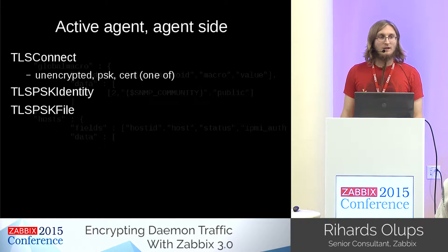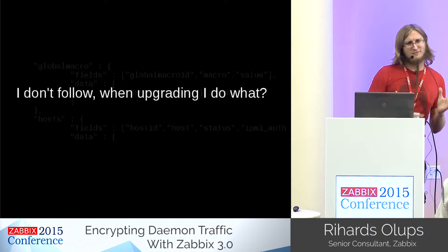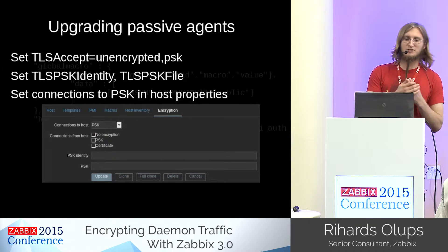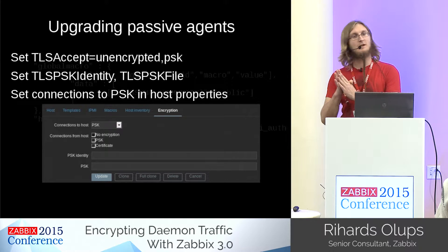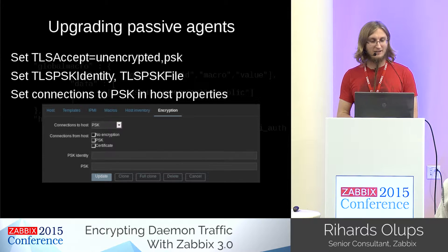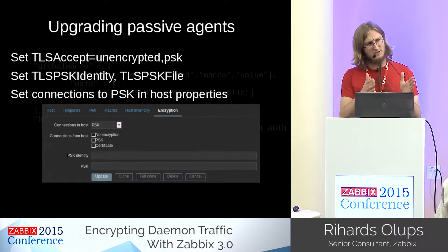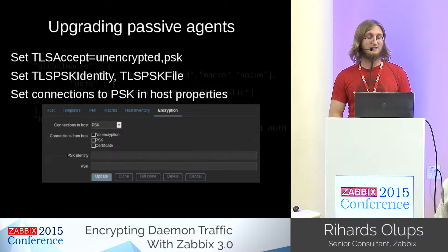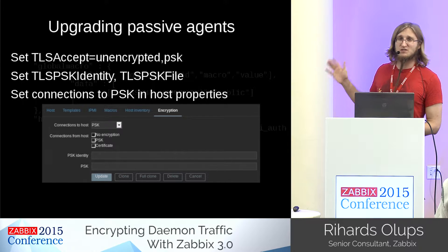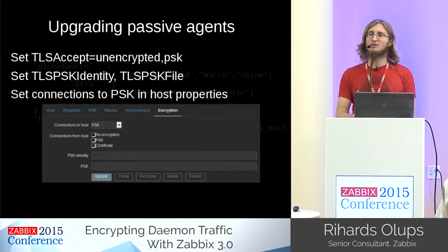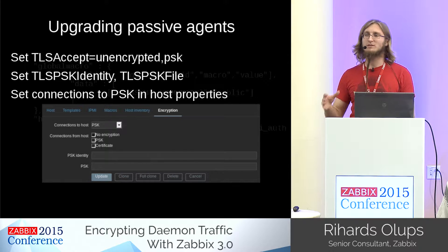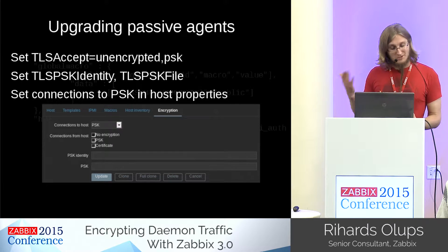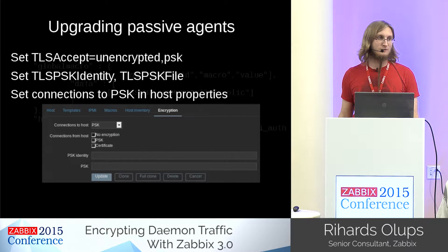Summary for upgrading: for passive agents, set in the agent config that it should also accept PSK in addition to unencrypted, specify the PSK identity and file, then in the host properties specify the same. The great thing about doing it in this sequence is you don't lose any values — there's no moment when the agent and server disagree. The agent first accepts both, and once the server switches to encrypted, the agent switches to accepting only encrypted.